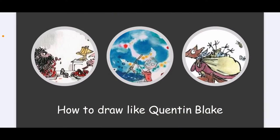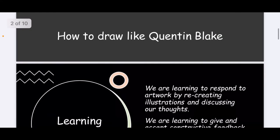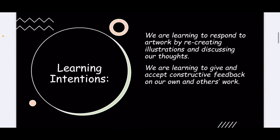Now that we have finished reading Chapter 2, we're going to move on to the task I've created for you this week, and that's all about how to draw like Quentin Blake. As you know, Quentin Blake is the illustrator for many Roald Dahl stories and he is very, very famous. You can see there are three pictures on the screen — one is from The Twits, one from George's Marvellous Medicine, and of course Fantastic Mr Fox. Our learning intentions for today are: we are learning to respond to artwork by recreating illustrations in the style of Quentin Blake and discussing our thoughts.